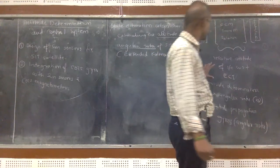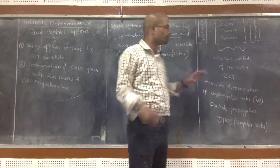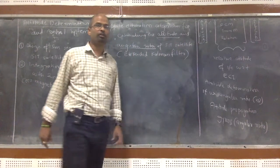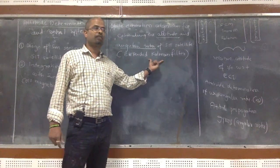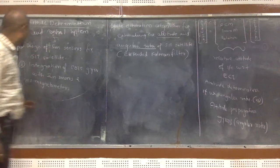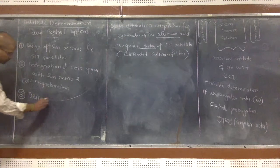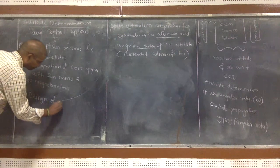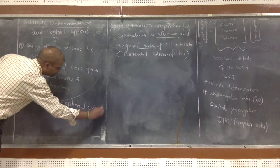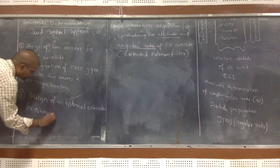You are going to fuse the sensors and the models — all of that will be fused to figure out and estimate the spacecraft attitude and angular rates. You look at something like an Extended Kalman Filter. This again could be a simple project. So here I am going to write the third task as the design of an optimal estimator for estimating attitude.